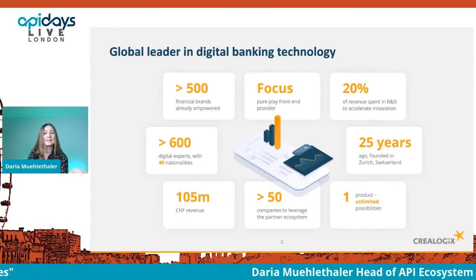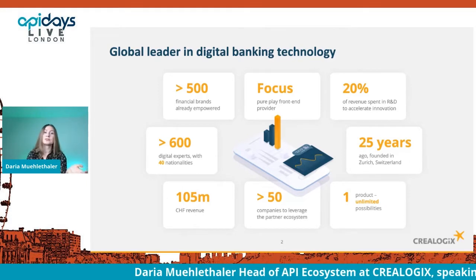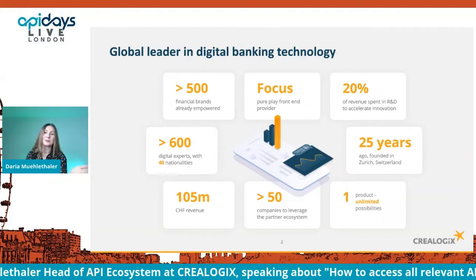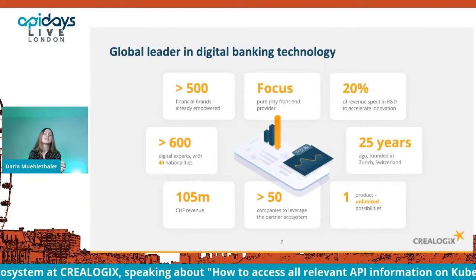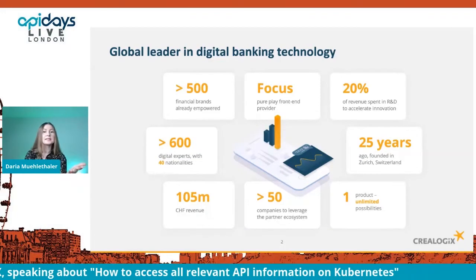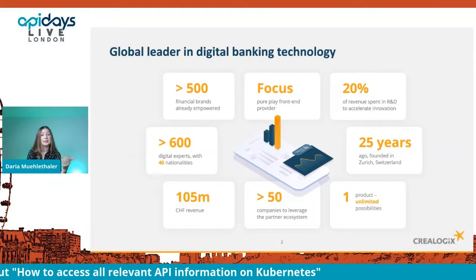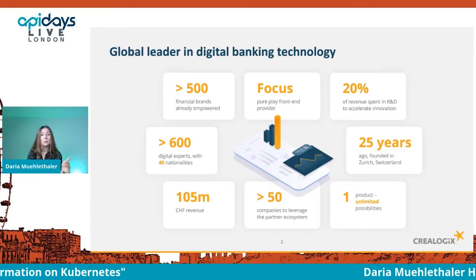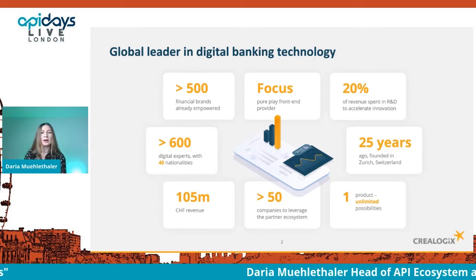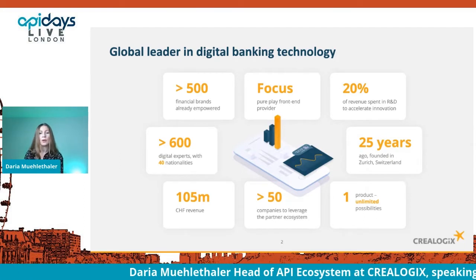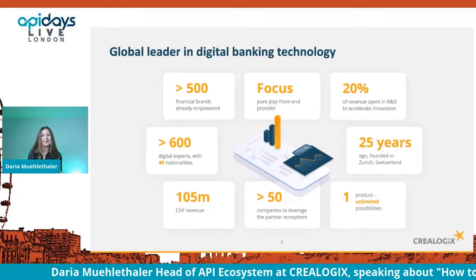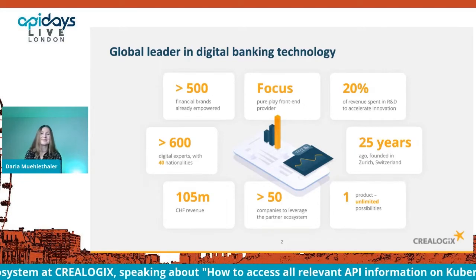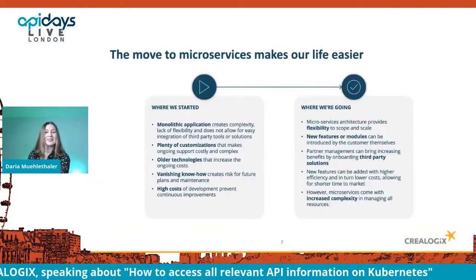At some point our portfolio had grown to a certain extent. While serving banks that mostly host solutions on-premise, we found ourselves with not just a few products but a really broad portfolio — considering customer customizations — all based on monolithic architecture. We then decided to move to one product with unlimited possibilities, which naturally called for microservices.